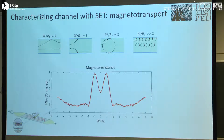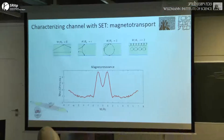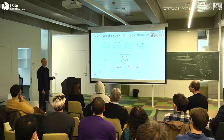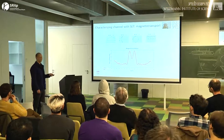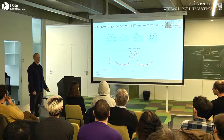Let's think about how to use this to measure the real mean-free path. Ideally the magnetoresistance would be constant with magnetic field in this cartoon, with no change. But we see some upturn at high fields.